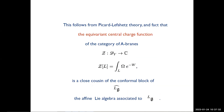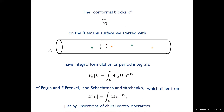This follows from Picard-Lefschetz theory and the fact that the equivariant central charge function on the category of A-branes — which is simply the period of omega times e to the minus W on your Lagrangian — is naturally called the equivariant central charge function. This equivariant central charge function is a close cousin of conformal blocks of the affine Lie algebra associated to G. Namely, the conformal blocks of the affine Lie algebra have integral formulations as Landau-Ginzburg period integrals, which differ from the equivariant central charge by insertions of some chiral ring operators. What you recover in this way is exactly the integral formulation of conformal blocks of Feigin, Frenkel, Schechtman, and Varchenko.